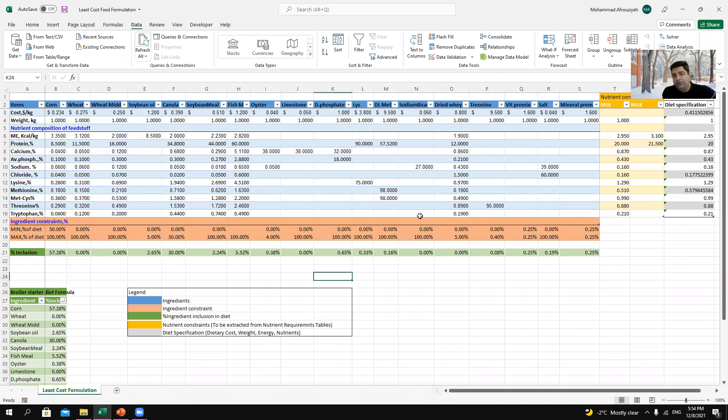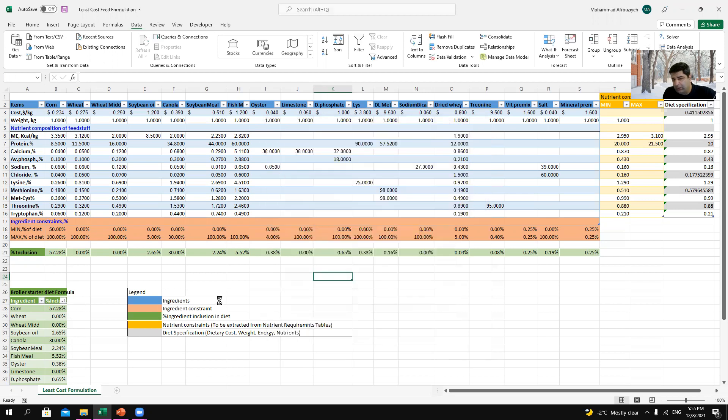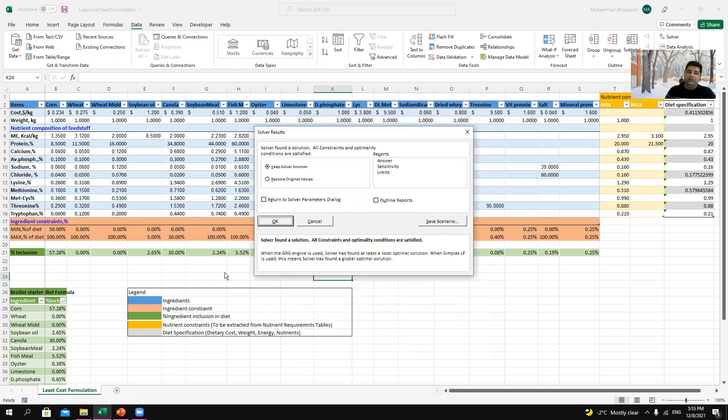I will post the link for this video where I showed you how to create a spreadsheet for least cost feed formulation which runs based on linear programming models. Under the data tab, I just pressed solver and here I put dietary cost as objective cell and I wanted to minimize it. My goal is to minimize the cost.